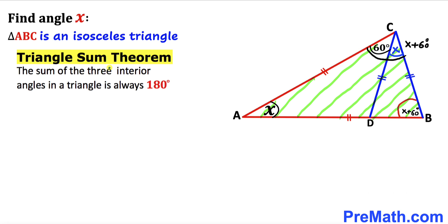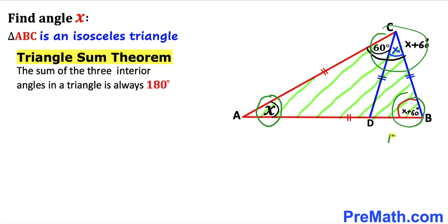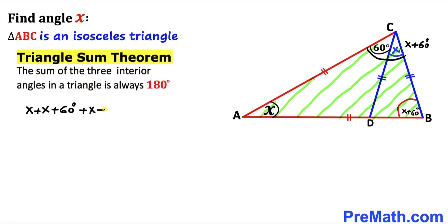Now let's recall the triangle sum theorem. According to this theorem, the sum of the three interior angles in a triangle is always equal to 180 degrees. So let me write it down: angle X plus angle X plus 60 degrees plus another angle X plus 60 degrees must be equal to 180 degrees. Combining like terms on the left-hand side gives us 3X plus 120 degrees equals 180 degrees.